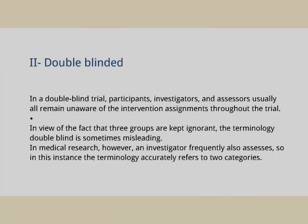In a double blind trial, the participant, investigator, and assessor usually all remain unaware of the intervention assigned throughout the clinical trial. The terminology 'double blind' is sometimes misleading as three groups are kept unaware. However, in medical research an investigator is frequently also the assessor, meaning the investigator himself collects data, so the terminology can refer to two categories: blinding of the physician/investigator and the participant.